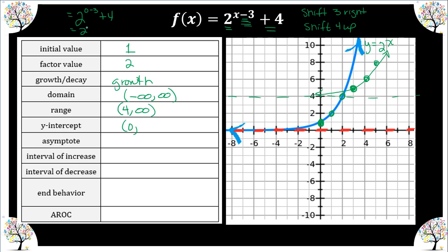Plugging in zero gives us 2^(0-3) + 4 = 2^(-3) + 4 = one-eighth plus four. So the y-intercept is (0, 4 and one-eighth), which is about where we have it right there.